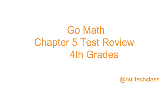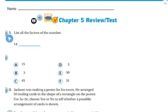Good morning. Today we are going to be reviewing for our Chapter 5 math test. Number 1 asks us to list all the factors of the number 14. I'm thinking about my multiplication chart. I know that 1 times 14 is 14, and 2 times 7 is 14. So my factors are 1, 2, 7, and 14.